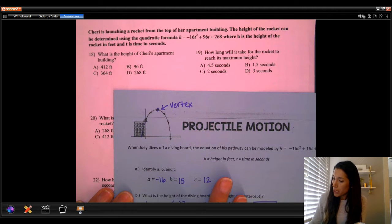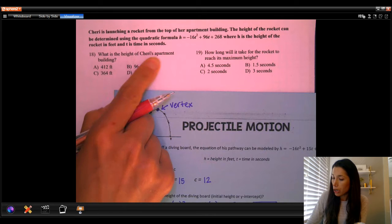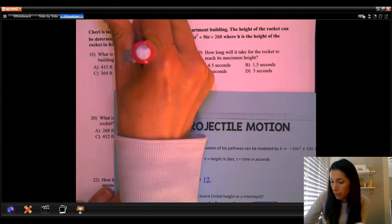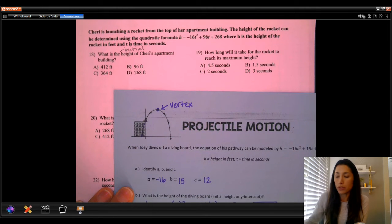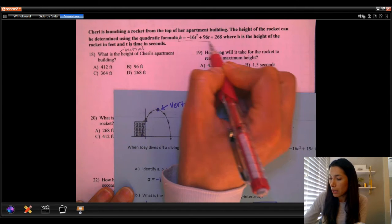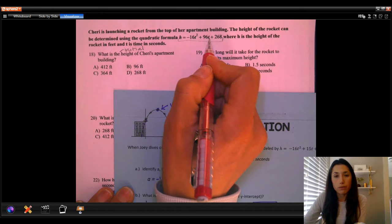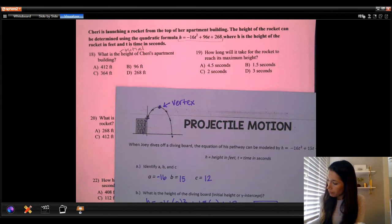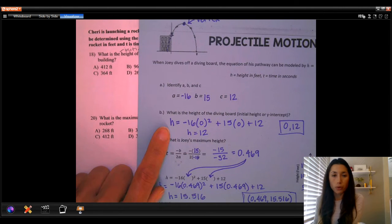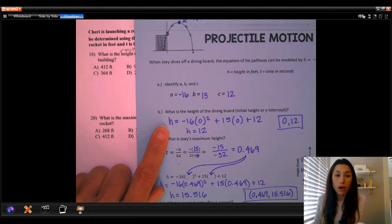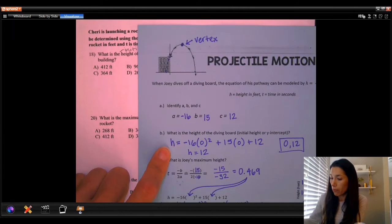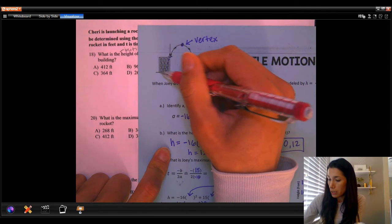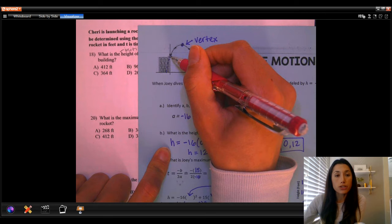Okay, so first thing, what is the height of Sherry's apartment building? Let's actually say initial height. Initial height means there's a time of zero. You're going to take your equation, and the time is going to be zero. That's what you're plugging in for T. That can also be seen if we look on your toolkit. Question B on your toolkit, what is the height of the diving board? If we're looking at the parabola in terms of this, this would be the building that Sherry is launching a rocket from. So this would be our initial height.